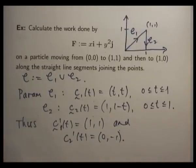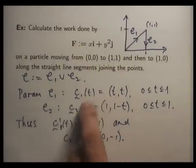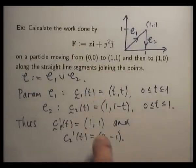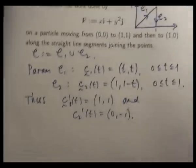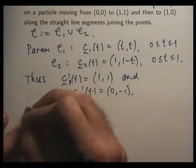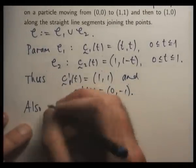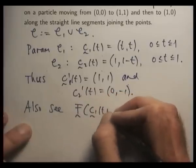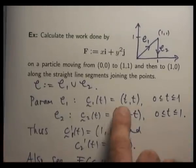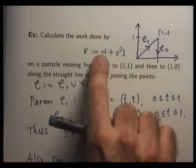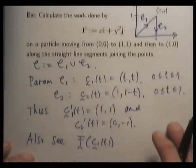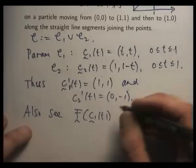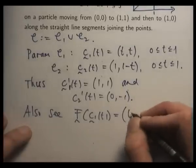So the last thing we need to do is evaluate F along these two parametrizations and then take the dot products and then integrate. So F along C1, well, I go here, x equals t, y equals t, so I sub in here and here. So I'm going to get something like (t, t²).